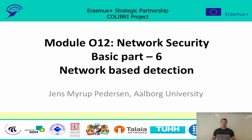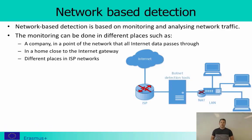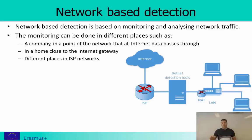Welcome to part six of the basic module in network security. We will be talking about network-based detection of malware and botnet activities. Network-based detection can be done at different points in the network — the important thing is that we have traffic coming through a point and are able to analyze it. That could be at a company's internet gateway, on the internal network, in a home at the internet gateway, or even in ISP networks — for example, all traffic sent from an ISP to a peering provider.